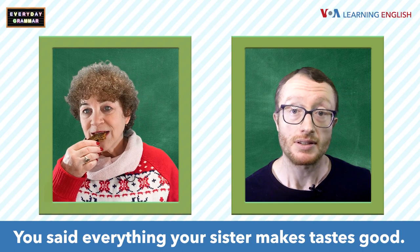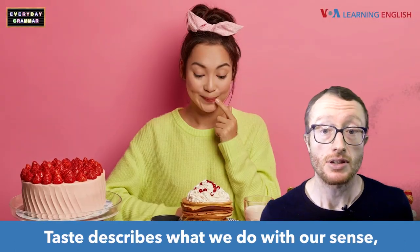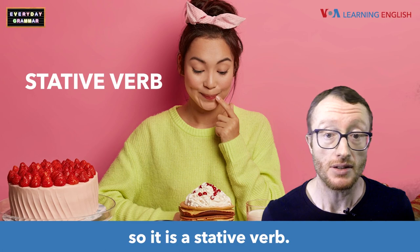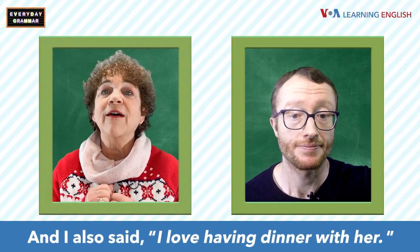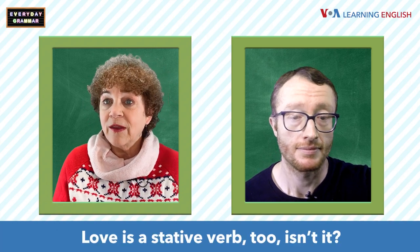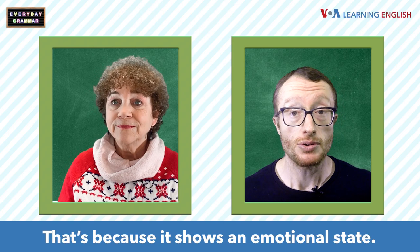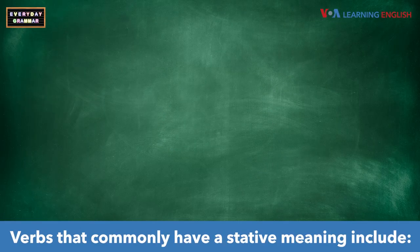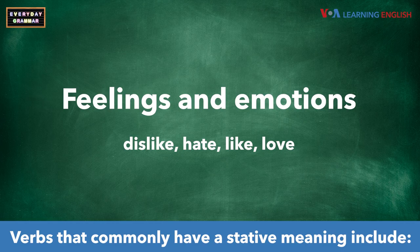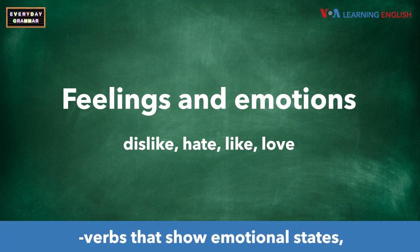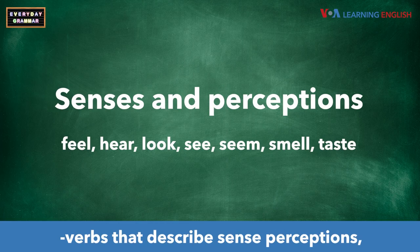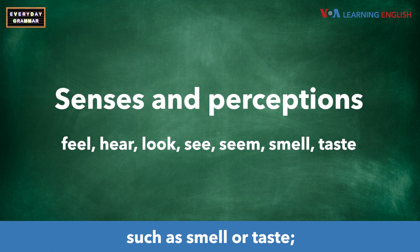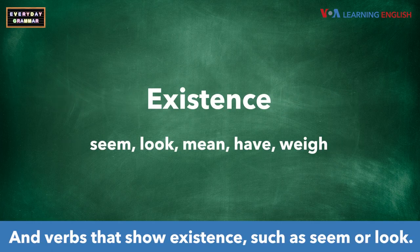You said everything your sister makes tastes good. Taste describes what we do with our senses, so it is a stative verb. And I also said I love having dinner with her. Love is a stative verb too, isn't it? That's because it shows an emotional state. Verbs that commonly have a stative meaning include verbs that show emotional states, such as love and dislike, verbs that describe sense perceptions such as smell or taste, and verbs that show existence, such as seem or look.